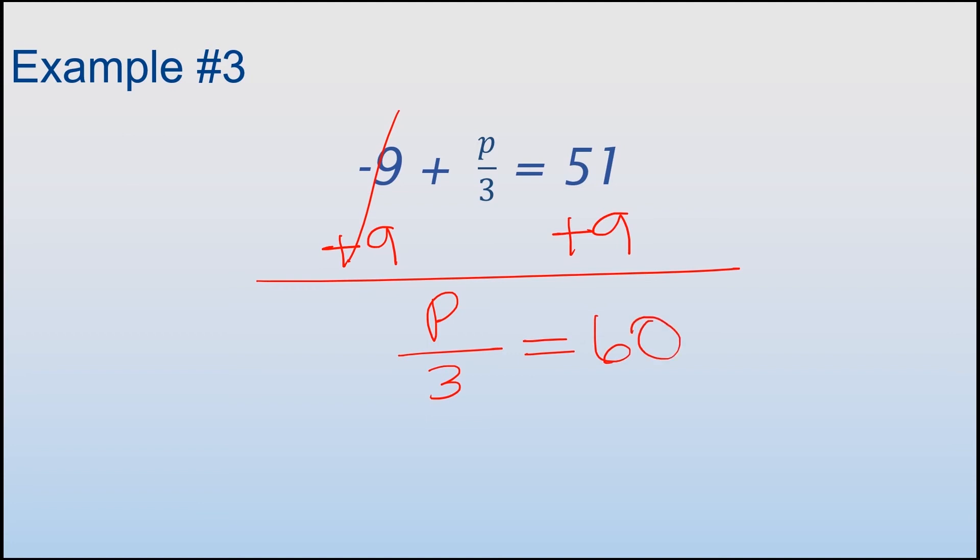Now this is P divided by 3, so I'm gonna multiply both sides by 3. This goes away, multiply this side by 3. I'm left with just a P over here, and over here I have 60 times 3, which is 180. Okay, so now I'm gonna rewrite my problem, but I'm gonna plug in 180 for P to see if I solved correctly.